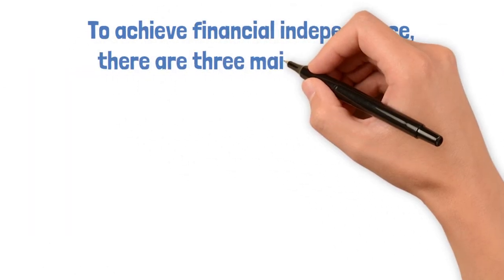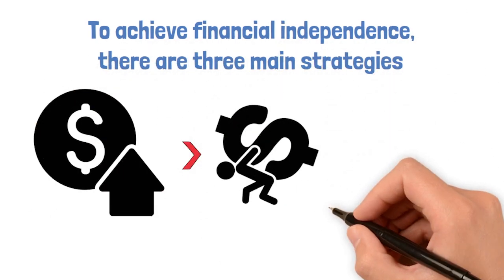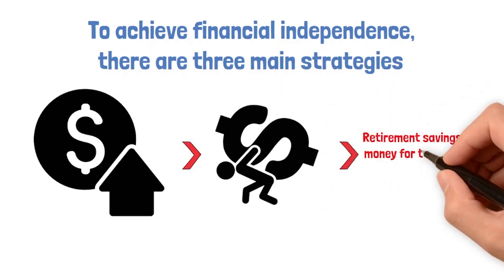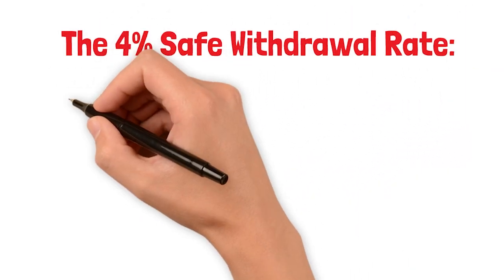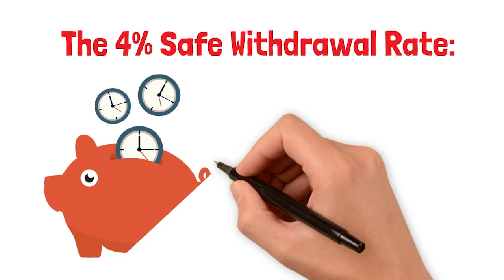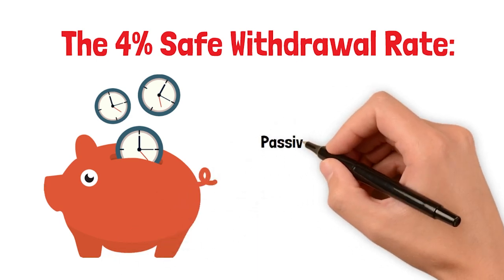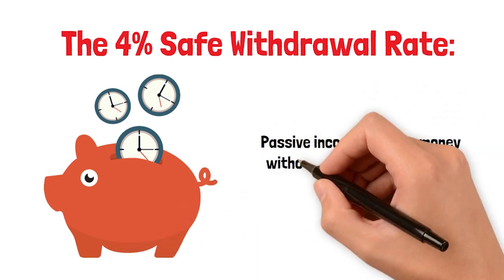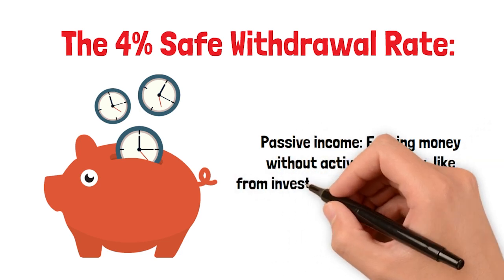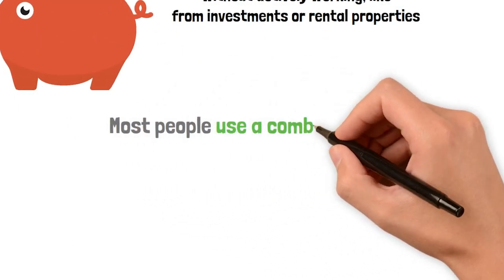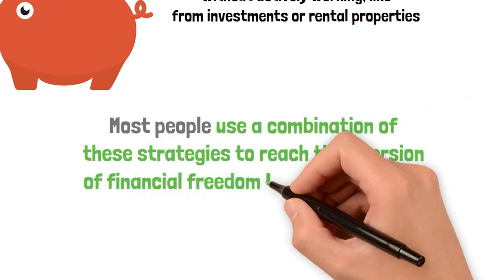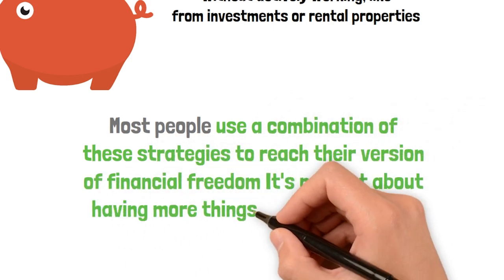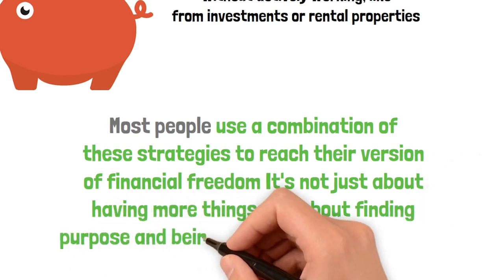To achieve financial independence, there are three main strategies: Retirement savings - saving money for the future when we stop working. The 4% safe withdrawal rate - withdrawing a small percentage of our savings each year to support ourselves. And passive income - earning money without actively working, like from investments or rental properties. Most people use a combination of these strategies to reach their version of financial freedom. It's not just about having more things. It's about finding purpose and being in control of our finances.